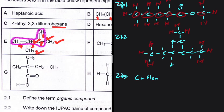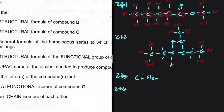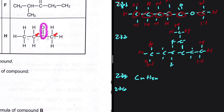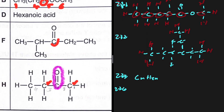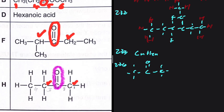For 2.3.4, the structural formula of the functional group of compound F: compound F has a carbon double-bonded to an oxygen sandwiched by two other carbons — that is a ketone. The functional group structure should show C=O flanked by two carbons with no hydrogens on those flanking carbons. If you add hydrogens to those carbons you would be drawing propanone, not the functional group of a ketone.